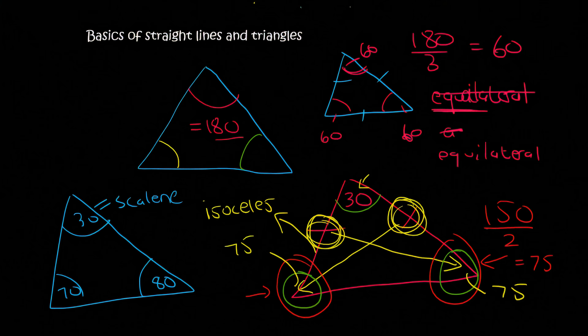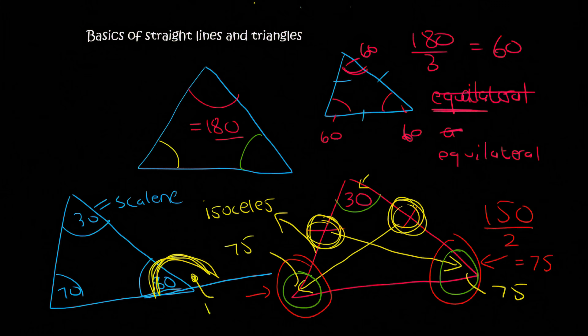They often like to include straight lines with triangles. So I could extend this line a little bit over here. Now we know that these two angles over here — the 80 and this one — should always add up to 180, because that's what straight lines do. And so this angle here would have to equal 100, because it's on a straight line.